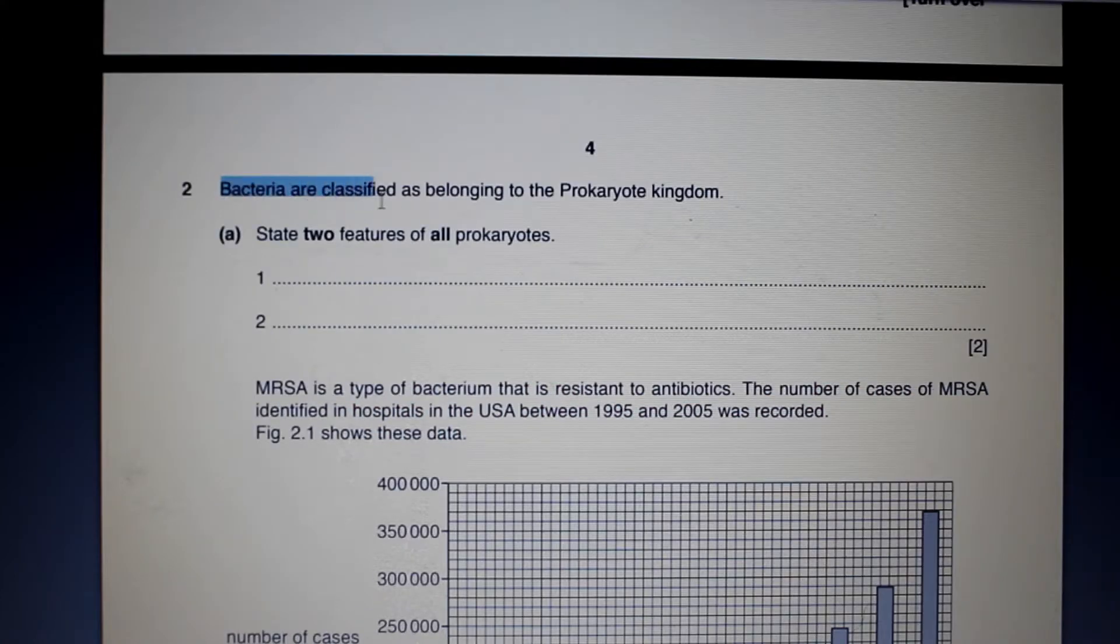Bacteria are classified as belonging to the prokaryote kingdom. State two features of all prokaryotes. And here you can see why it's extremely important that you know the characteristic features of all the different classes of living things. So the characteristics of all prokaryotes are, they're often unicellular, they have no nucleus, they have cell walls which aren't made of cellulose and they have no mitochondria. So you can choose any of those to get your two marks for that.